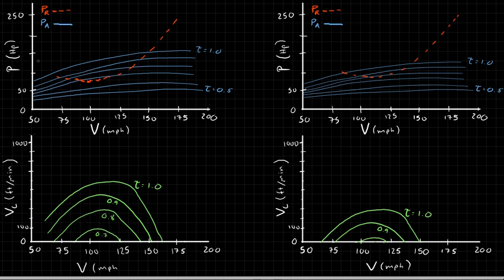Our maximum level flight airspeed is now lower — closer to 150. Going up another 10,000 feet to the plot on the right, you now need a throttle setting of 0.8 to get even a tiny climb rate, and the maximum level flight airspeed is even lower. Comparing the two plots, the power available range has compressed and the power required plot has moved up — so we require more power to maintain steady level flight as we go up in altitude, but we have less power available.